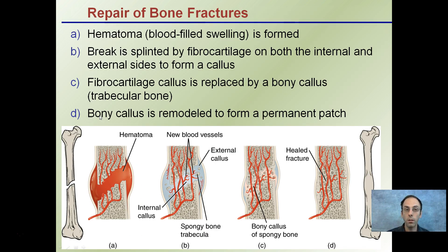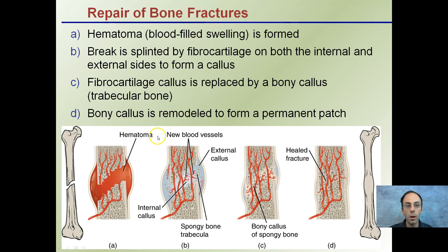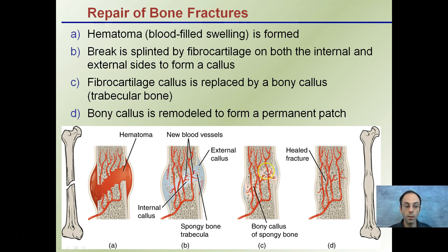Lastly, I want to go over how the body repairs a bone fracture. Initially, a blood-filled swelling called a hematoma is formed — heme referring to blood — where the fracture occurred. The break is then splinted by fibrocartilage on both the internal and external sides to form a callus region. This cartilage callus is then slowly replaced by a bony callus over time, which is why we need bones in a cast to hold everything in place. The bony callus is then remodeled to form a permanent patch, and the area where the fracture occurred is actually a little thicker and slightly stronger than it was originally.